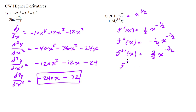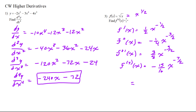Now we come to the fourth derivative. We multiply: negative three times five is 15, eight times two is 16, so negative 15 sixteenths x to the negative seven-halves. Since it was written in radical form to begin with, we may want to go back to that form: negative 15 over 16 times the square root of x to the seventh.